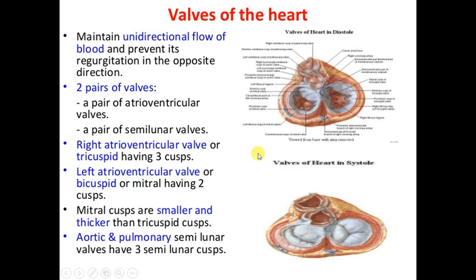There are two pairs of valves: one pair at the atrioventricular junction — one on the right side and one on the left side — and a pair of semilunar valves between the right ventricle and the pulmonary trunk and between the left ventricle and the aorta. The right AV valve has three cusps and is named the tricuspid valve, while the left AV valve is bicuspid and named the mitral valve. The aortic and pulmonary semilunar valves each have three semilunar cusps.